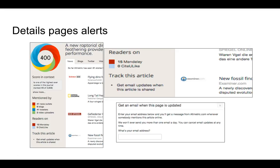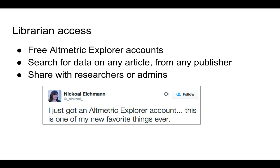By drilling down into the data we can see that a particular paper has 15 readers on Mendeley. Also, particularly useful for librarians is the free altmetrics explorer account. You can search for data on any article from any publisher and then share it with researchers and admins — a way to prompt, promote, and show them where their research has been communicated, or at least show them that it isn't being communicated.